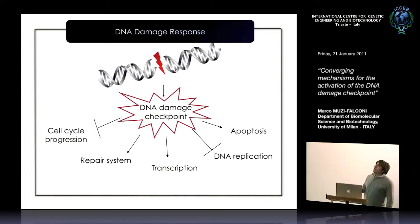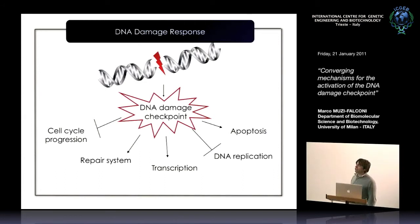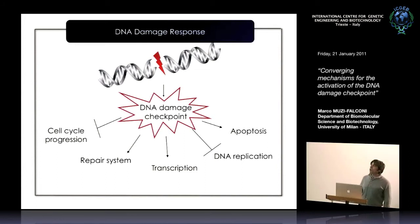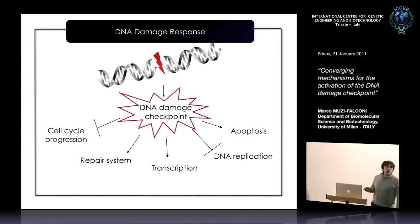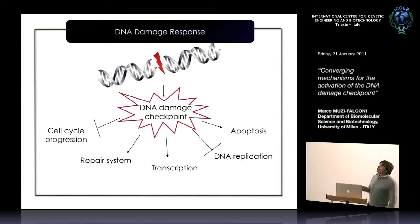The response to this signaling cascade is a delay in cell cycle progression — different critical transitions of the cell cycle are slowed down or halted. There is an induction of all the repair mechanisms necessary to remove these lesions, a change in the transcriptional program of the cell, and a slowdown in DNA replication because you want to avoid replicating a damaged chromosome. And in higher eukaryotes, there is also induction of the apoptotic pathway.